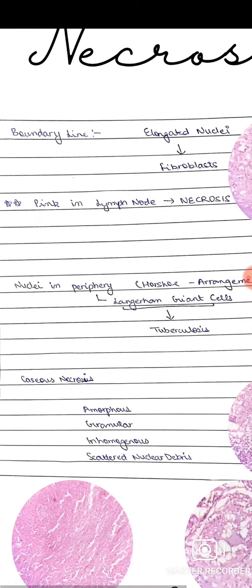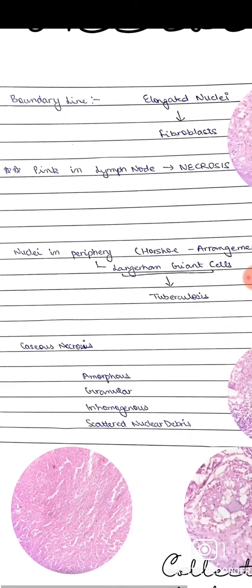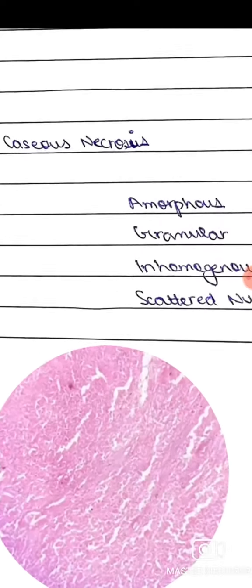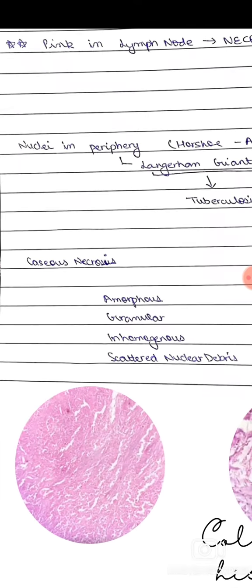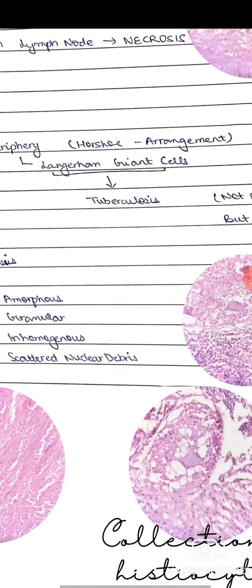Which type of necrosis is this? The material we can see is amorphous, granular, inhomogenous, with scattered nuclear debris. This is characteristic of caseous necrosis.